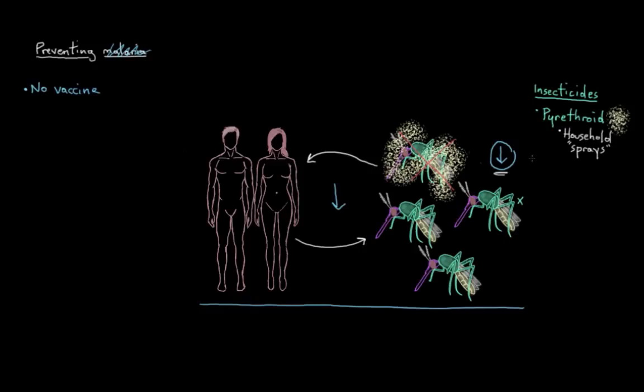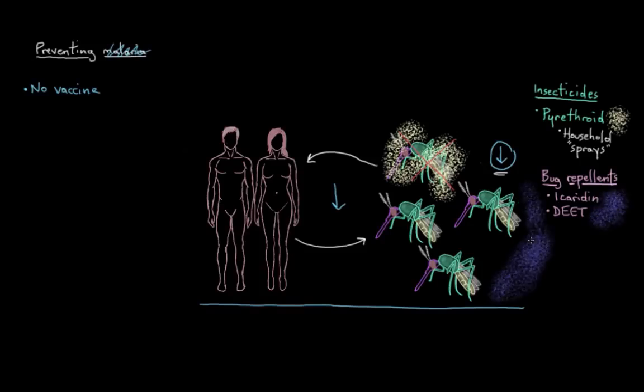You might have heard of two spray-on bug repellents, one called Icaridin and one called DEET. These are chemicals that you can spray on your clothes or your skin to keep mosquitoes away. Mosquitoes actually hate the smell of these chemicals. We can't really smell it, but mosquitoes do, so they stay away.